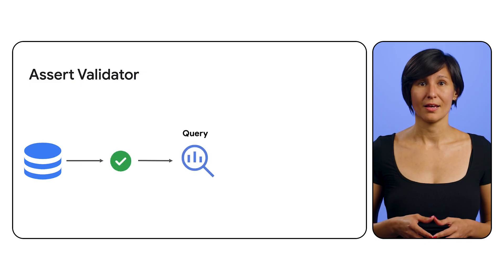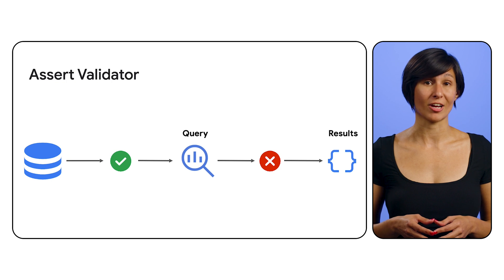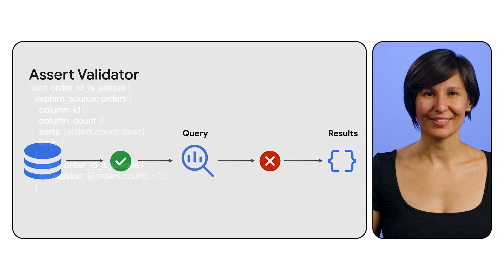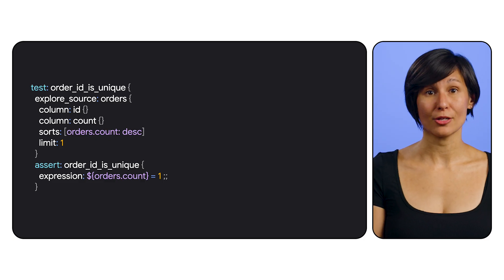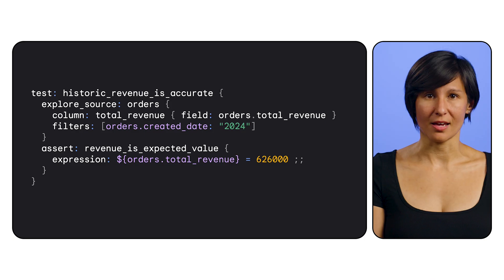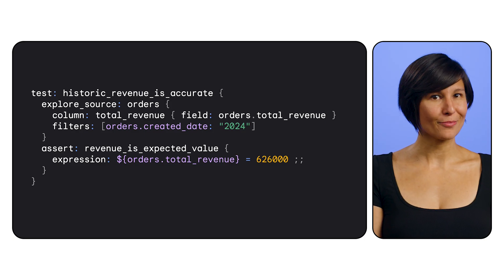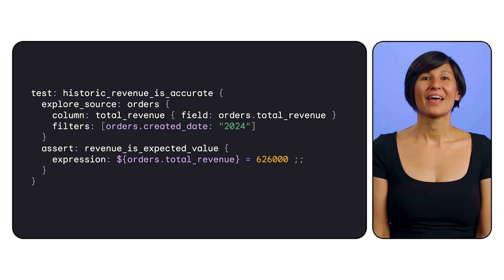Sometimes errors arise that are invisible to a query because the column exists in a database, but the query returns incorrect or invalid data due to an upstream model or data issue. That's where the assert validator comes in. The assert validator is a powerful tool when used with well-written data tests. You can write general data tests that check that your primary keys are unique, or write more custom data tests to check that historical data returns an expected number — we wouldn't want last year's revenue returning zero, as that would tell us there's an error somewhere upstream. Like the SQL validator, the assert validator can also be configured to exclude or include certain explorers and models. Using this validator with well-written tests can proactively safeguard your data pipelines against hidden issues.